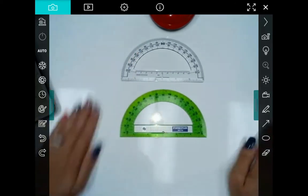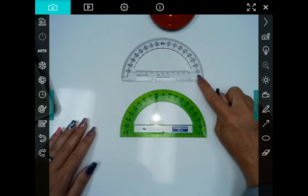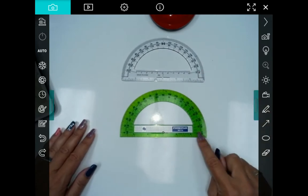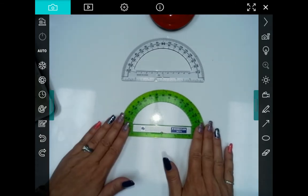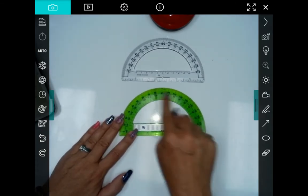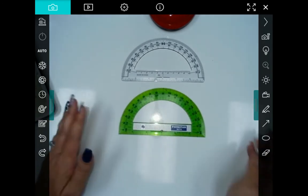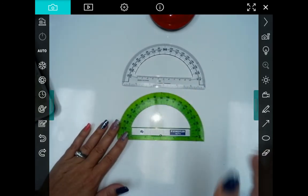Now there's no difference here between my clear protractor and my green protractor. They both measure exactly the same way. The green protractor is just a little bit easier to see on paper, but if you have a clear one, totally fine too.